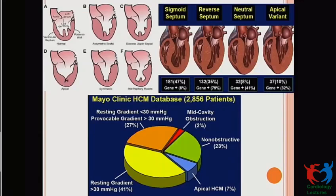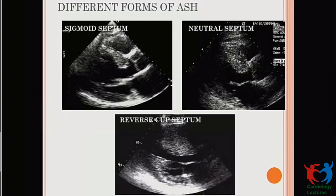The various forms of LVH include the normal pattern opposed to asymmetric septal hypertrophy, apical hypertrophy, symmetric concentric hypertrophy, mid-cavity muscular hypertrophy giving rise to mid-cavity gradient, and different septal shapes: sigmoid septum, reverse septum — which has strong correlation with genetic mutation — neutral septum, and apical variety. From the Mayo Clinic database, up to 41% of patients can have a resting gradient of more than 30 mmHg, another 27% a provokable gradient, and non-obstructive HCM constitutes 23%. Apical HCM and intermediary obstruction constitute the rest.